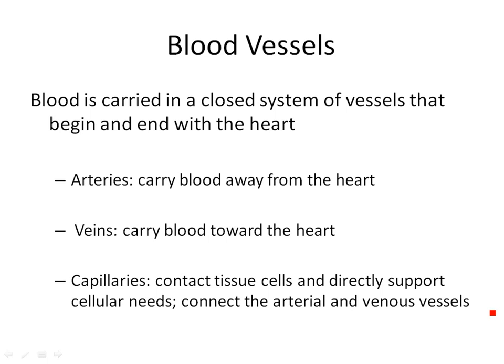Blood is carried in a closed system of vessels that begin and end with the heart. The vessels that carry blood away from the heart are always called arteries — that is by definition an artery. Don't get hung up on arteries carrying oxygenated blood and veins carrying deoxygenated blood, because there are cases where that is not true, like in the pulmonary and fetal circulation. A vein is defined as carrying blood towards the heart.